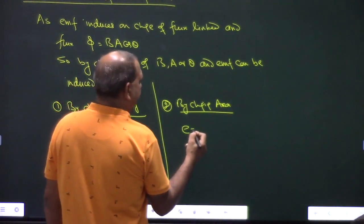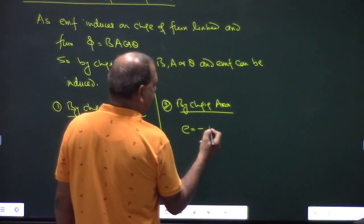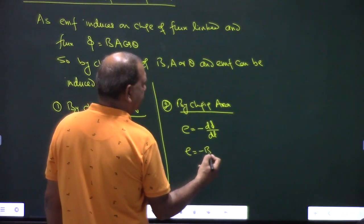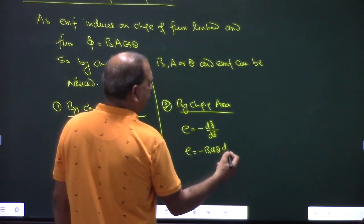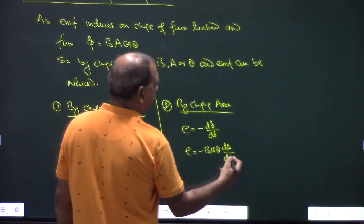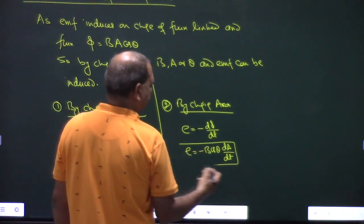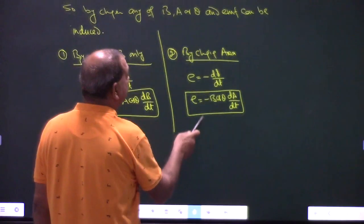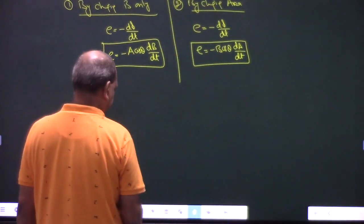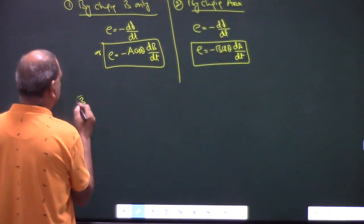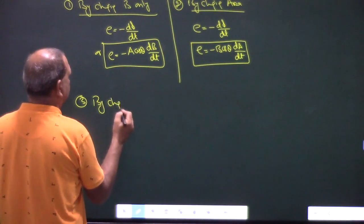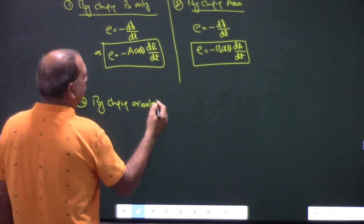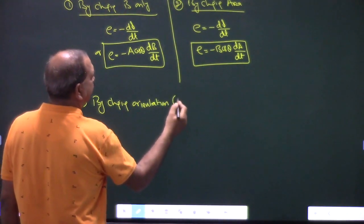Second method: by changing area A. So E equals minus d(phi)/dt, which gives E equals minus B·cos(theta)·dA/dt. Third method: by changing the orientation — that is, changing theta.